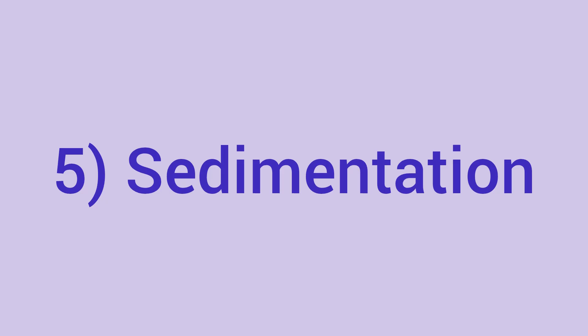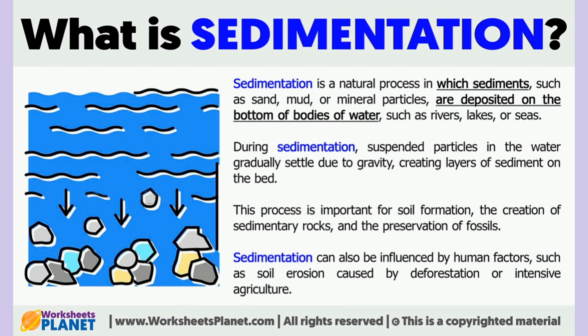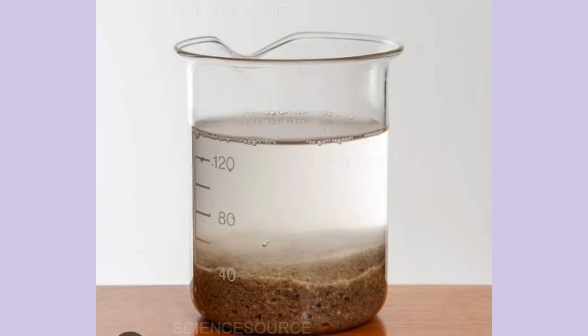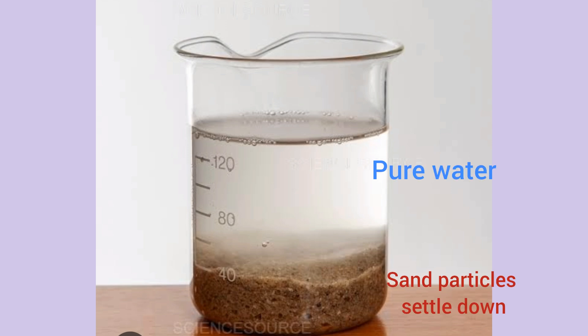The fifth method is sedimentation. Sedimentation is a process used to separate solid from a liquid when the heavier components in a mixture settle after water is added to it. The activity here is: bring sand and water to a glass, mix the sand and water thoroughly, and keep aside for a few minutes. Observe that sand particles settle down and pure water remains on the upper part.